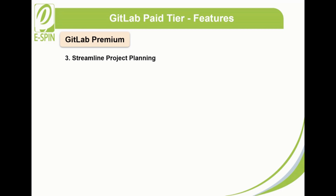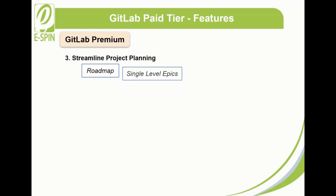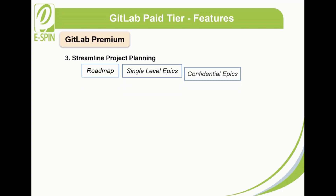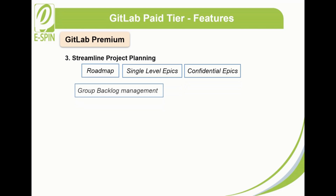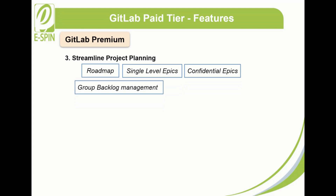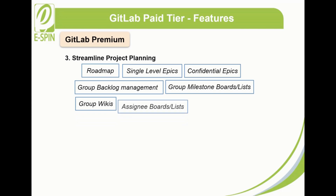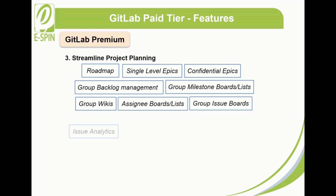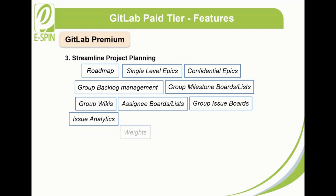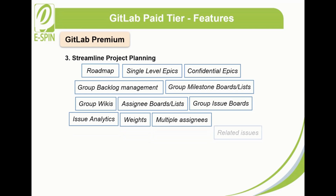Streamline project planning in GitLab includes roadmap, single-level epics, confidential epics, group backlog management, group milestone boards/lists, group wikis, assignee boards/lists, group issue boards, issue analytics, weights, multiple assignees, and related issues.